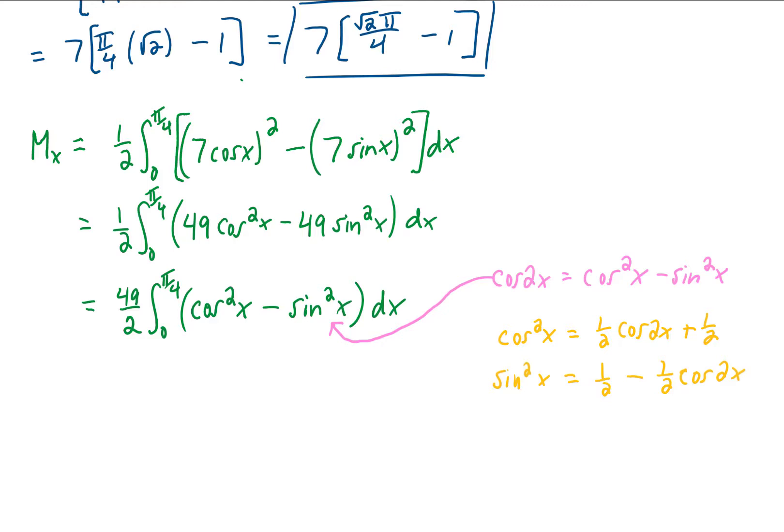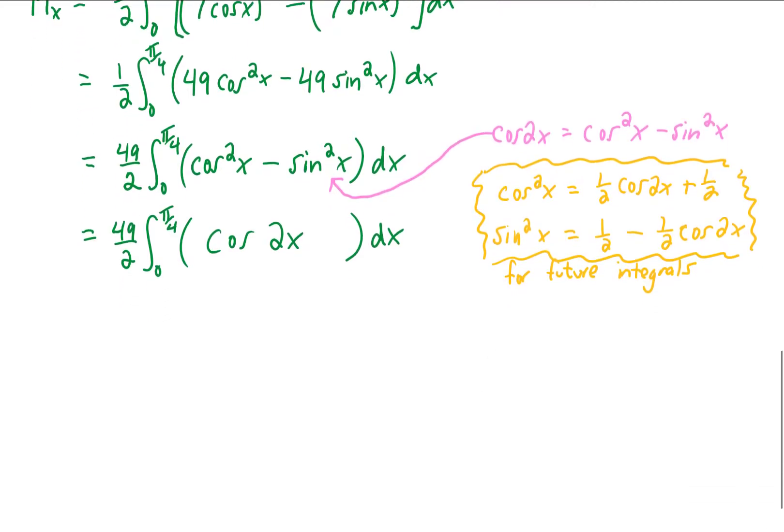Now you'll notice that cosine squared minus sine squared can be rewritten with this double angle identity, and this is going to be really convenient for us. But as a side note, it is very common, if given a cosine squared or a sine squared to integrate, that we're going to use one of these two double angle identities right here. You'll use those identities a lot in the future, but again, for this problem, we are just going to replace cosine squared minus sine squared with cosine of 2x.